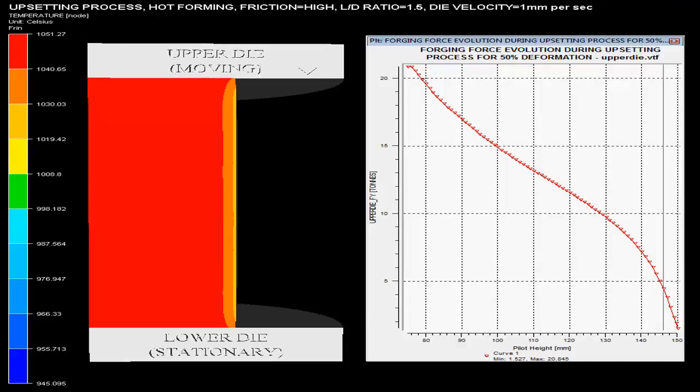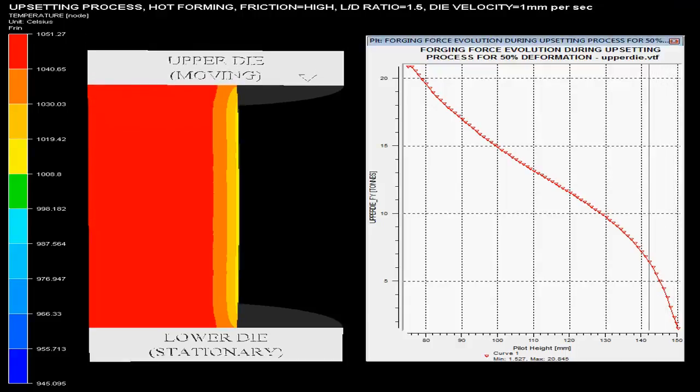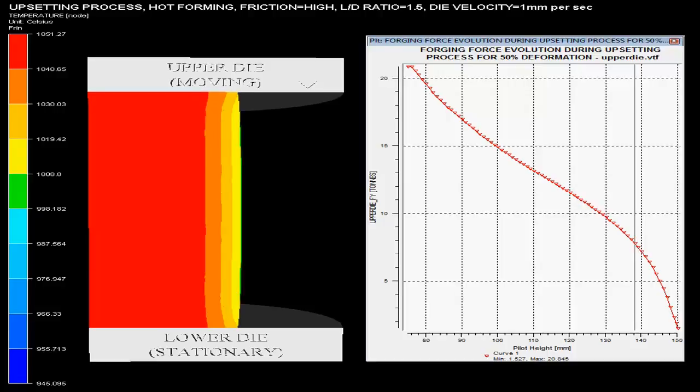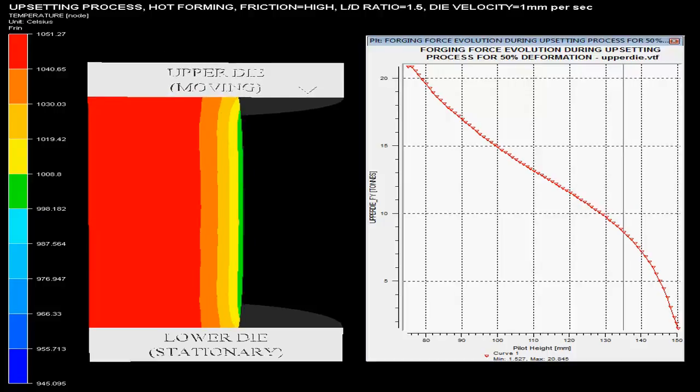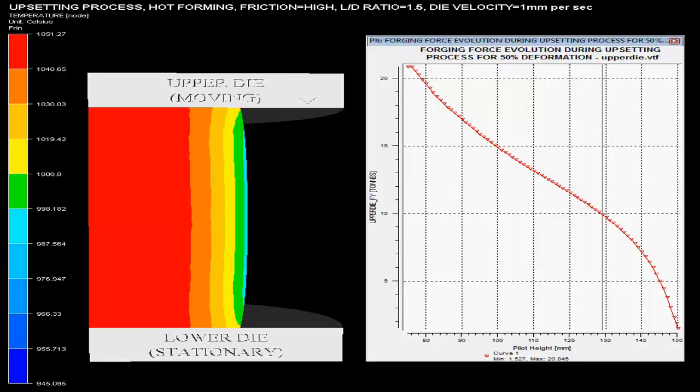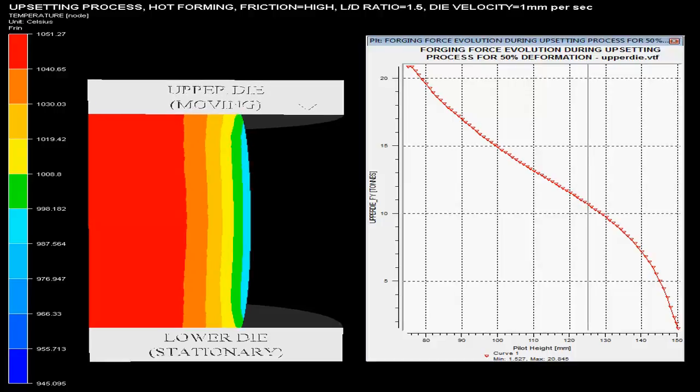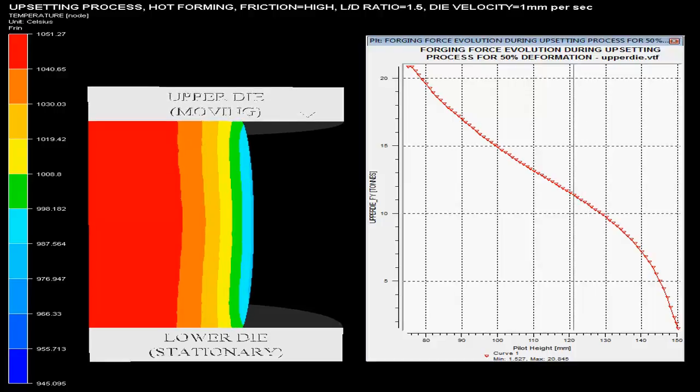The video shows the upsetting operation using a hydraulic press. The initial steel billet has an L/D ratio of 1.5 and is taken hot. High friction between billet and dies is shown.